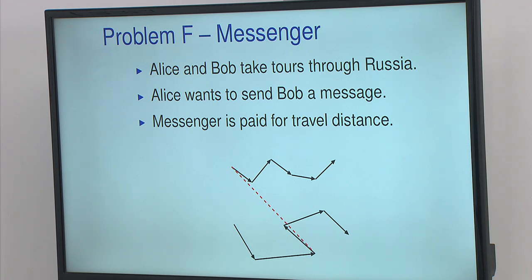Alice wants to send Bob a message. This message is sent by a Messenger. But the problem is that the Messenger is paid by the time it takes to get to Bob. So what they want to do is to minimize the time that it takes to get the message from Alice to Bob.